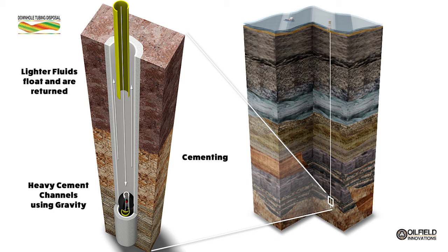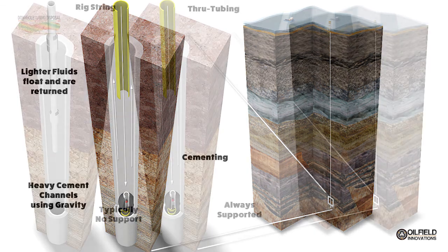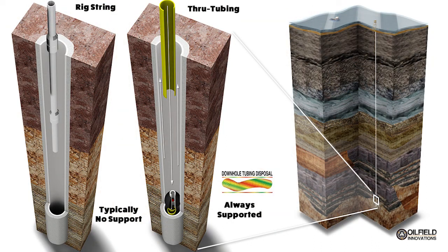The lighter fluids will float on top of the heavier cement and be returned through the annulus and the well head valves. This method of cement placement is much better than that used by a rig, which instead of using in-place tubing will remove the tubing and then run a drill string back in the well to perform the cementing. Because a rig's time is so expensive, they generally do not set a support packer and instead use viscous fluid below the cement which may or may not hold it. It's often the case that multiple cement plugs have to be set because they can't tag the cement since it has fallen through the viscous fluid used for support.